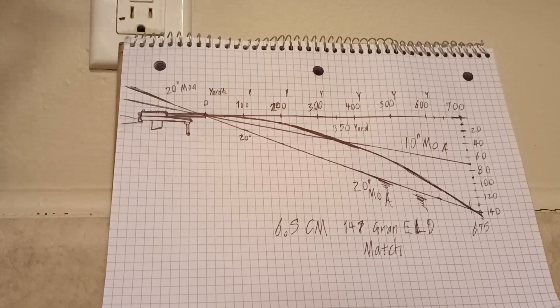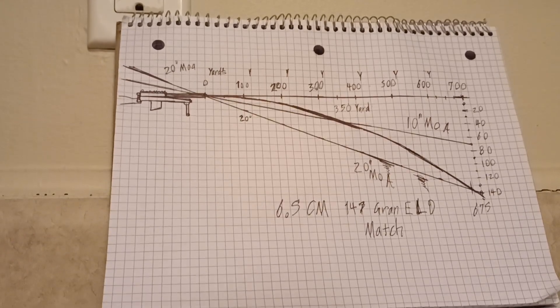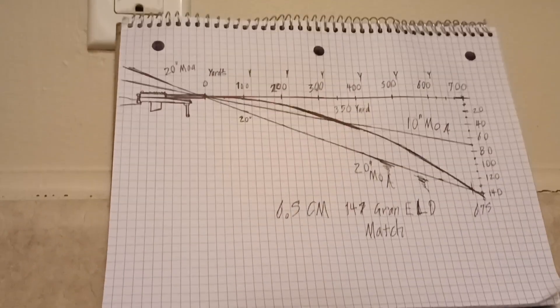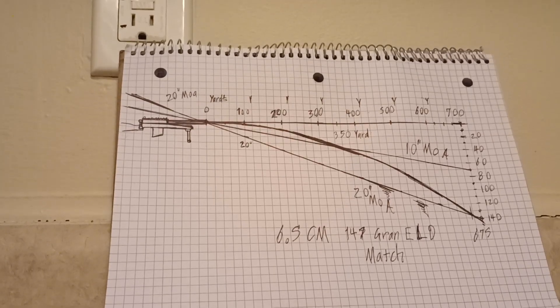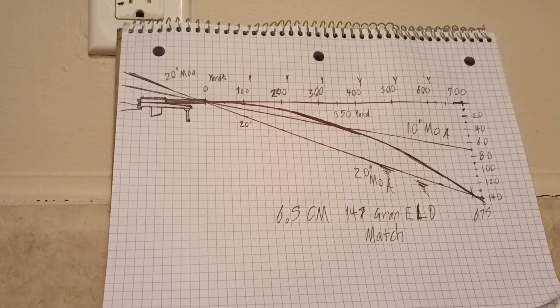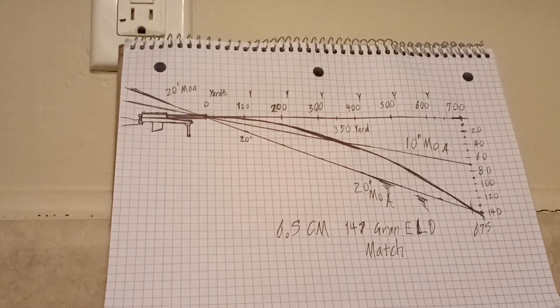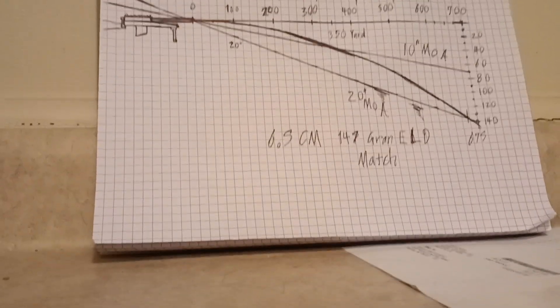You could go even a 30 MOA rail, and it would intersect your bullet even farther down its trajectory path. At 20 MOA and 700 yards, your scope should be perfectly aligned, and you should have roughly 40 MOA of adjustment farther down. Thanks YouTube.